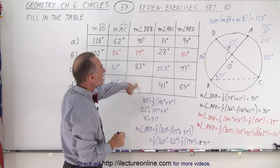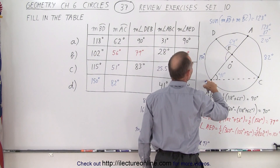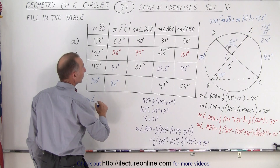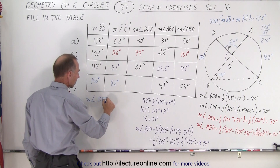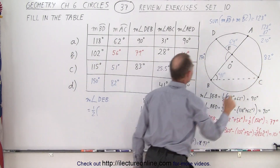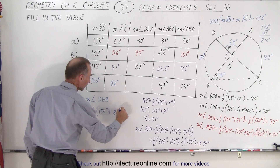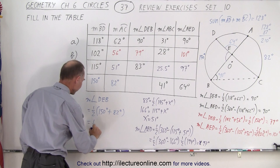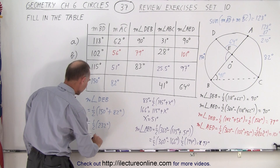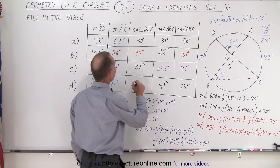Finally, the measure of the angle from D to E to B — that's this one right here. Angle D-E-B is going to be half the sum of arc B to D and arc A to C, which is 150 degrees plus 82 degrees, giving one half of 232 degrees. Half of that is 116 degrees, and that goes in here.